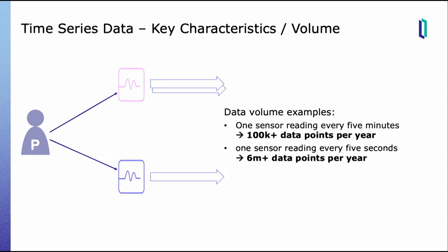Talking about data volume: if you have a patient in the ICU for a long time and take a measurement every five minutes, that accumulates to a lot of values. Going down to measurements every five seconds, you easily get millions of data points for a single patient for just one given type of value — and that accumulates quickly if you have many sensors, many values, and many patients.